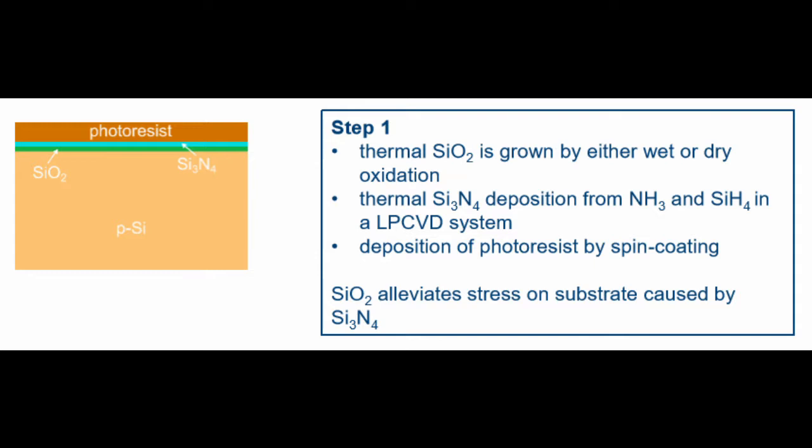Then silicon nitride Si₃N₄ is deposited using LPCVD, and a photoresist is deposited on top of the silicon nitride layer. The reason we added silicon oxide underneath is to alleviate the stress on the substrate due to the lattice mismatch between the silicon nitride and the silicon substrate.